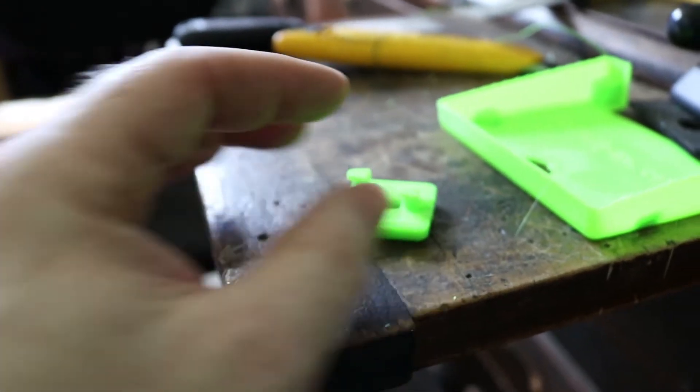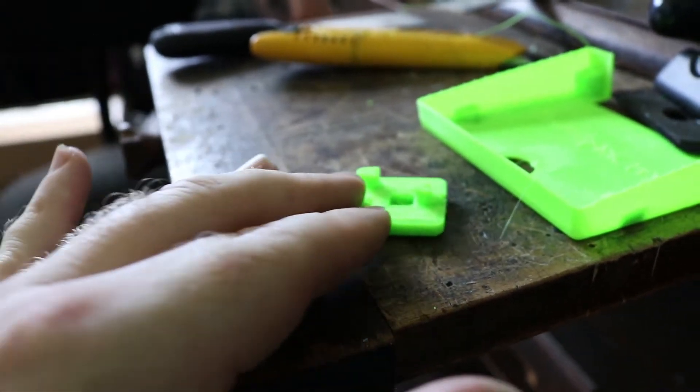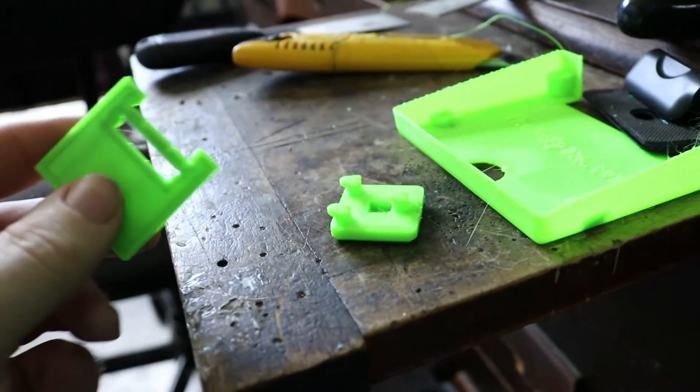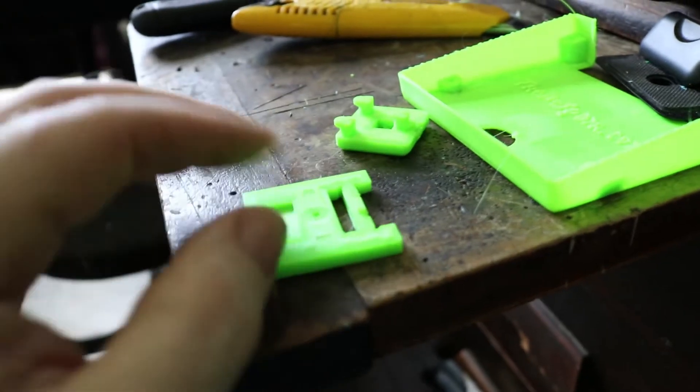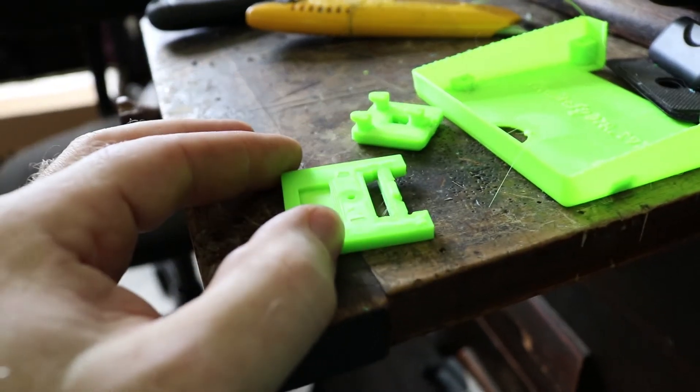So that's that one. I've also done feet for my Fluke 5200A, which didn't have any feet. This is a broken one, this is a prototype which I've broke, so I've made some more, also I've modified it.